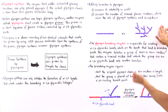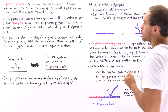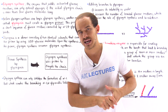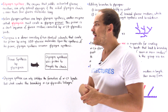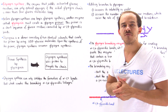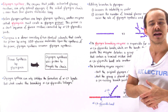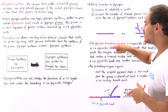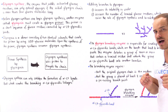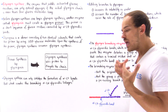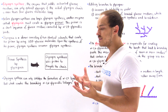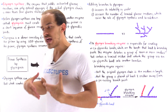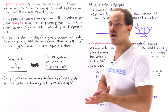Now that we know why branching takes place, let's discuss how it actually takes place. What is the enzyme that forms these alpha-1,6-glycosidic bonds? The enzyme is known as glycogen branching enzyme, and it synthesizes the alpha-1,6-glycosidic bonds that lead to the branching of glycogen.